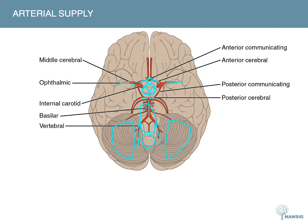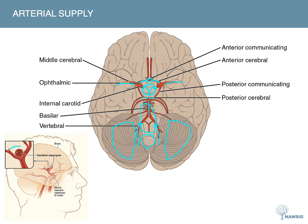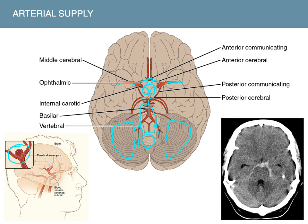The Circle of Willis is also a common site of Berry aneurysms — outpouchings of the arteries that can be asymptomatic for a long time but can compress local structures or, more feared, rupture. When they rupture, they bleed and can cause subarachnoid hemorrhages. On a CT scan, a classic image of subarachnoid hemorrhage shows a hyperdense area with finger-like projections in the middle.